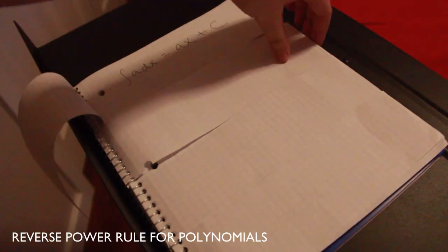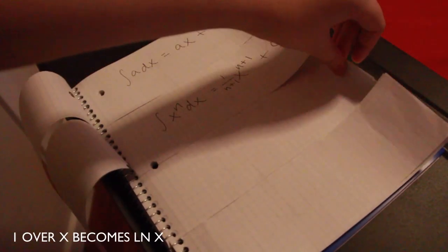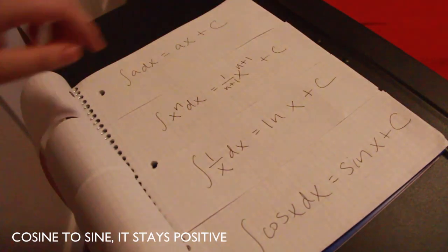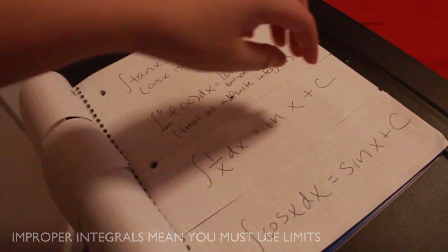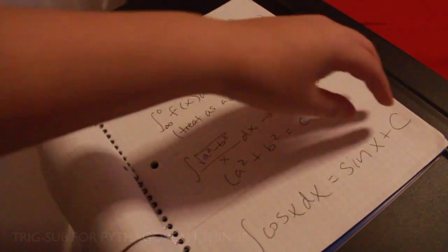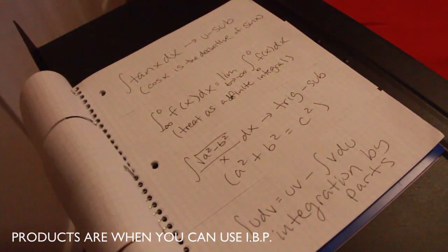Constants get a variable. Reverse power rule for polynomials. 1 over x becomes ln x. Cos and sine switch to its positive. U-sub when you see derivatives. Improper integrals meaning you use limits. Trig sub for Pythagorean things. Pronto start when you can use IVP.